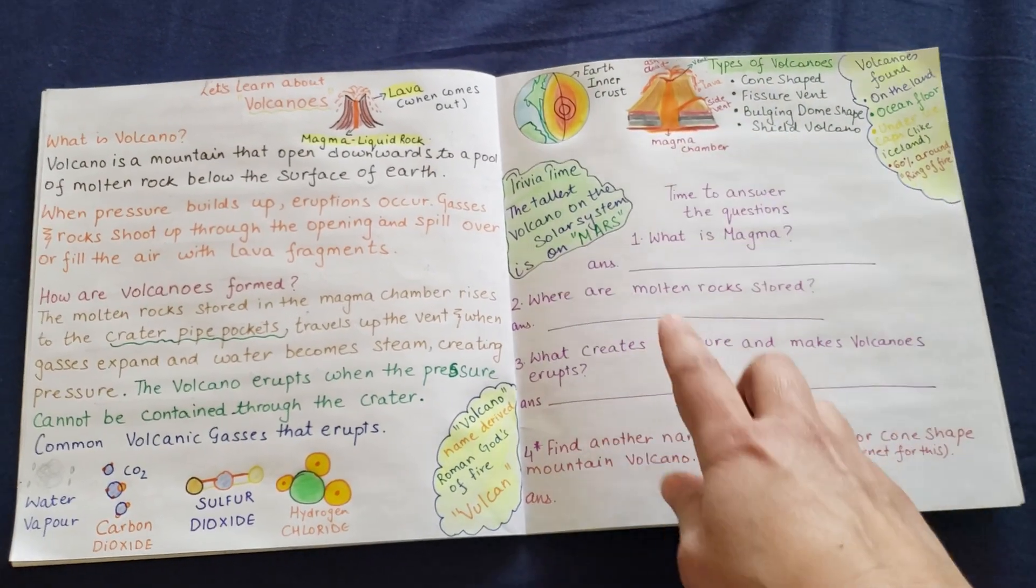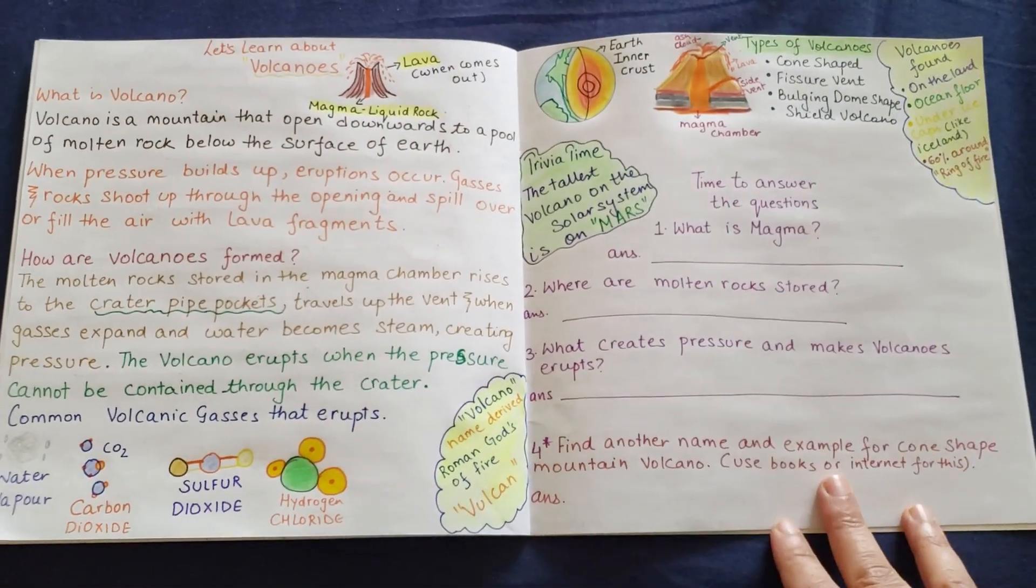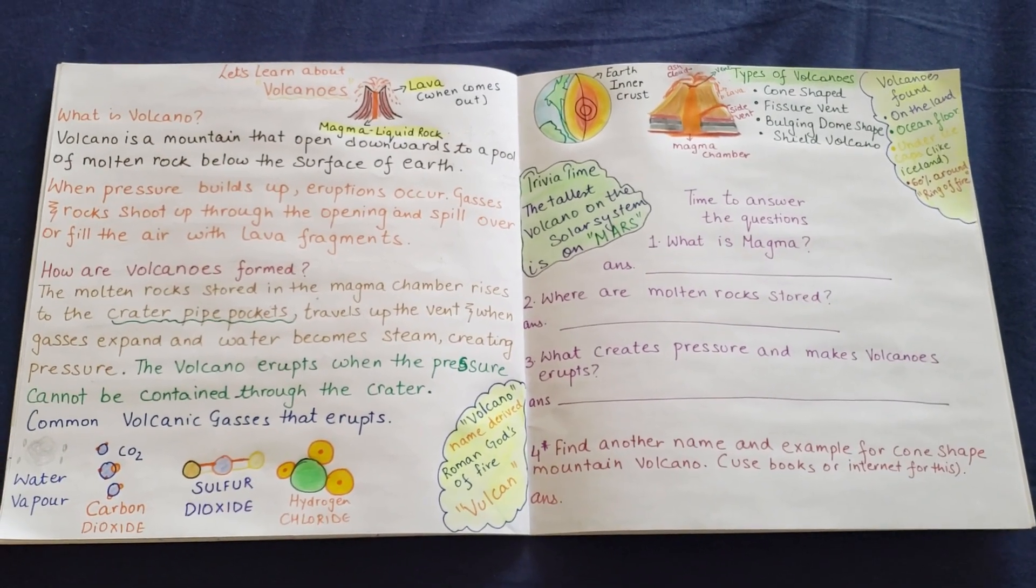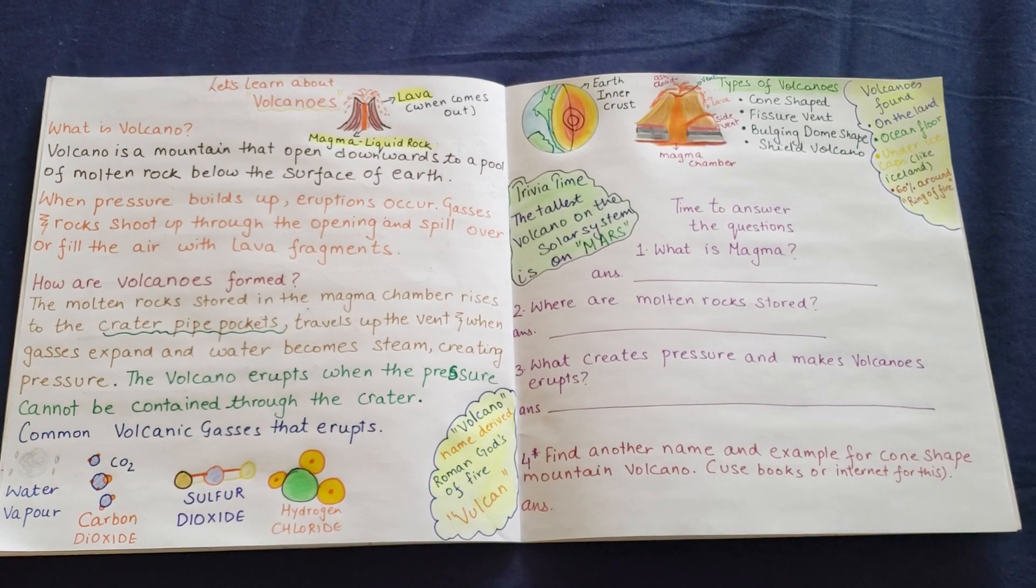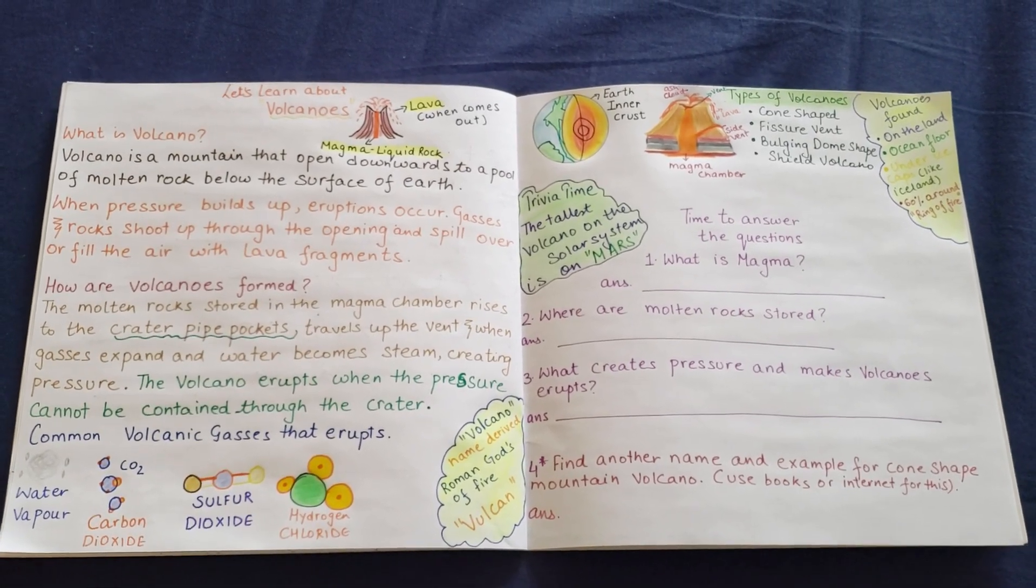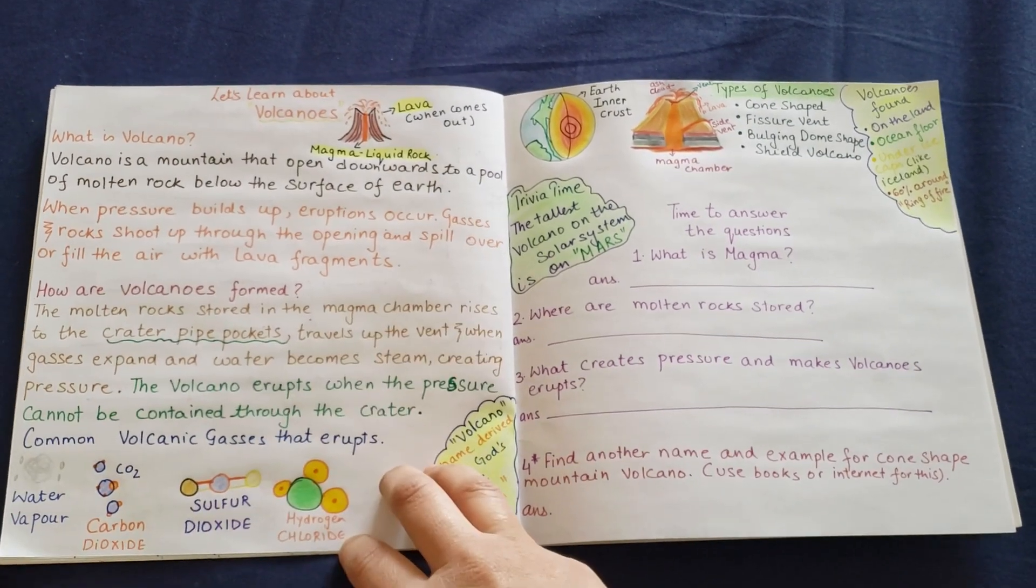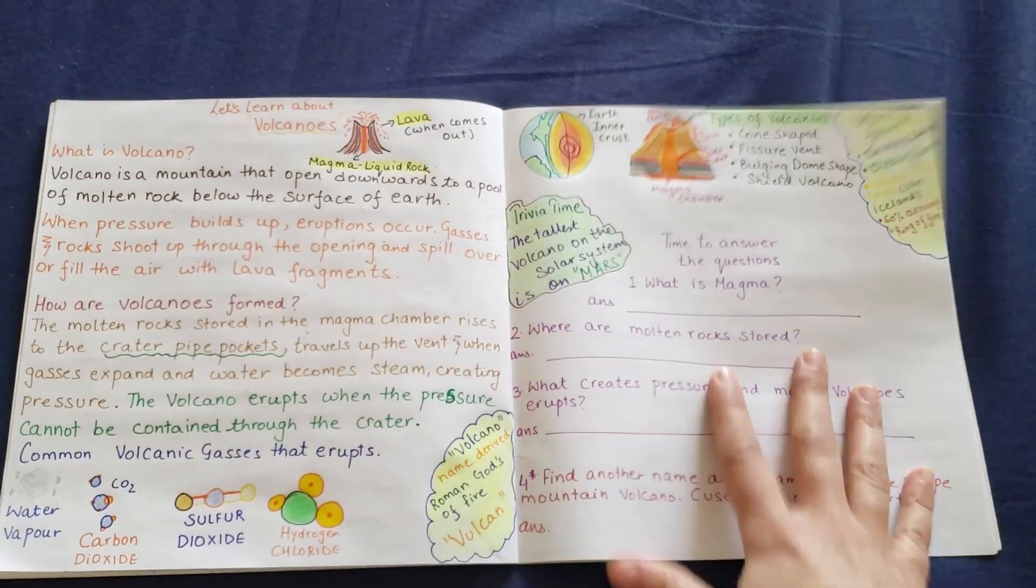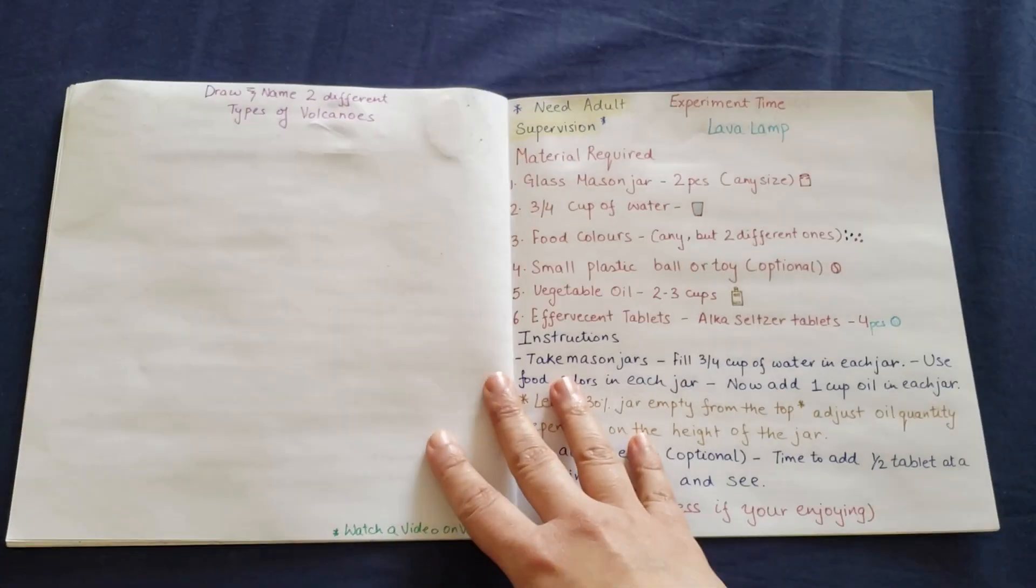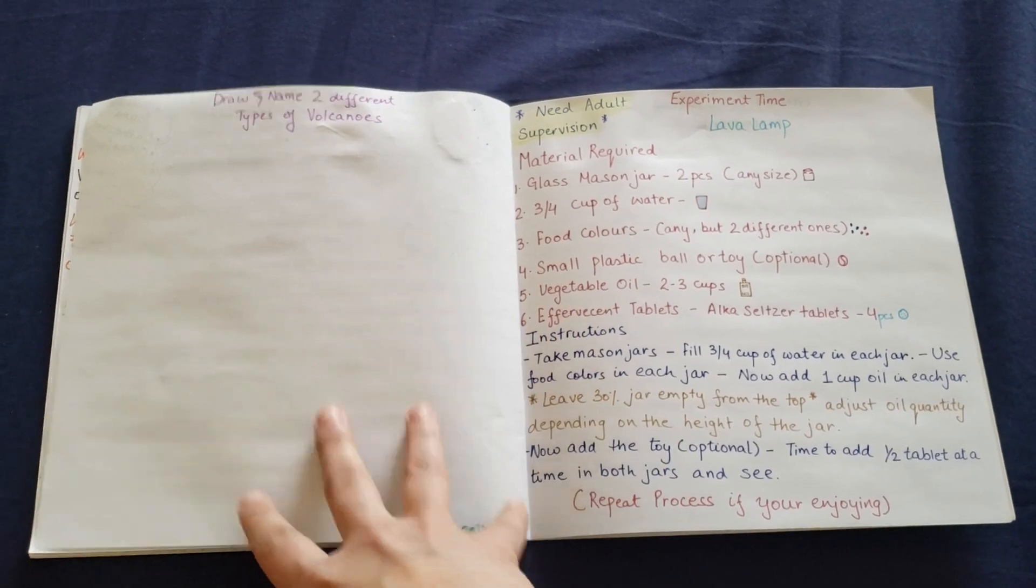And then there are these four questions that you have to answer. The first three questions you can answer from here. The fourth one, you have to either use books or internet to figure out the answer. So it's a great way to involve the kids in science. I've picked up a very easy topic, but month on month for all the books that I will be making, I'm going to be making different topics. I'm going to be jotting down the points here, with trivia and some information. And then going forward, there's an experiment which will coincide with the activity.